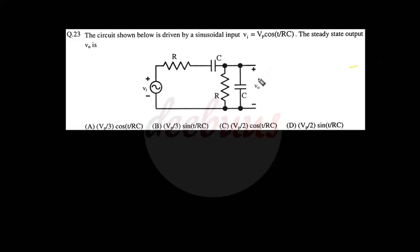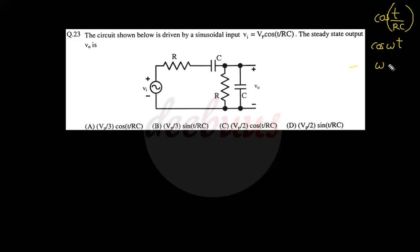Moving to another question: the circuit shown below is driven by a sinusoidal input vi = Vp·cos(t/RC). The steady-state output v₀ is — we have to calculate the steady-state output voltage. The input signal is cos(t/RC), so comparing with the standard signal cos(ωt), ω turns out to be 1/RC. Output voltage v₀ equals input voltage vi multiplied by this impedance divided by total impedance.